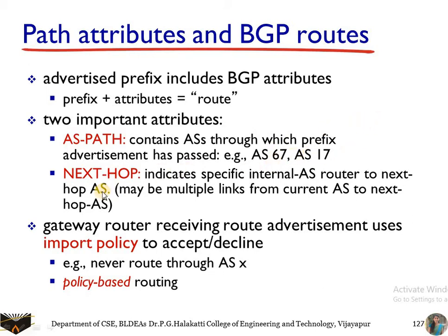The next attribute is next-hop. It indicates the specific internal autonomous system router to the next autonomous system — it informs internal autonomous system routers about the next autonomous system. An autonomous system may have multiple links to a single autonomous system, and all that information is exchanged both internally and externally.